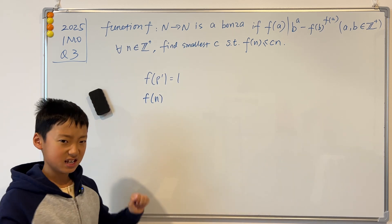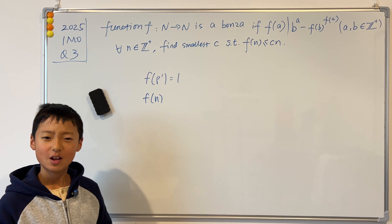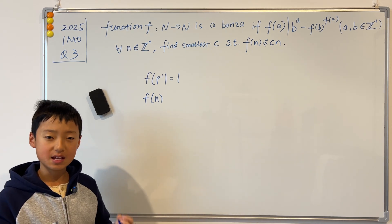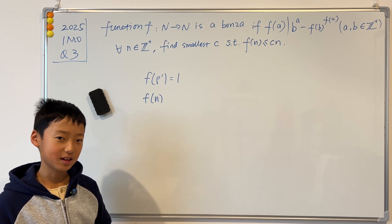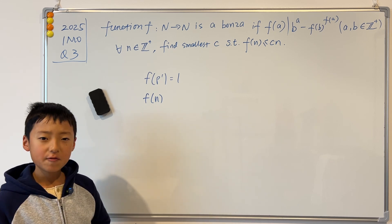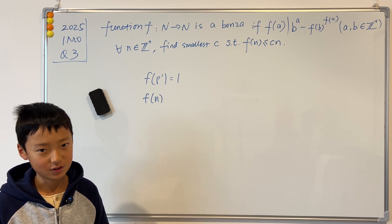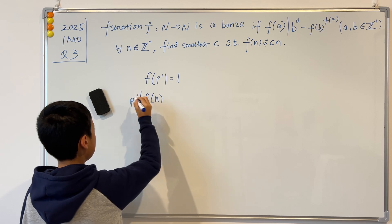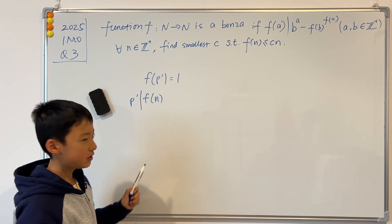n is any integer — this is what we actually want to find out. Do you have a feeling that f(n) will not have any odd prime factors? I have that feeling. If it did have odd prime factors, then we know that p' must divide f(n). Now to prove this wrong...